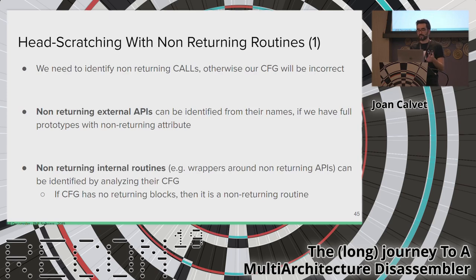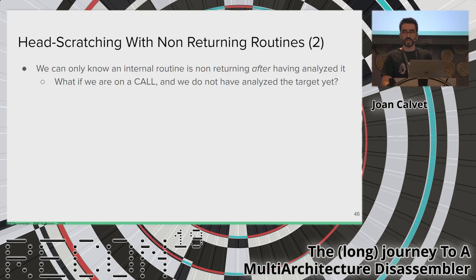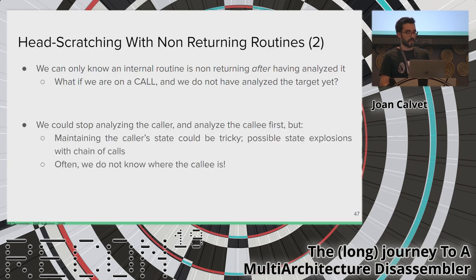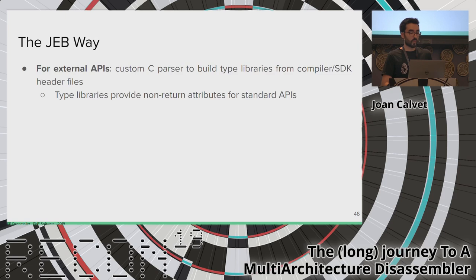We need to identify non-returning routines to have correct CFGs. For external non-returning APIs like ExitProcess, we can identify them from their names if we have their full prototypes with the non-returning attribute. For internal non-returning routines — for example, a wrapper simply calling a non-returning API — we analyze the CFG: if there are no returning blocks, it is non-returning. But we can only know this after analyzing the routine. What if we are at a call and haven't analyzed the target yet?